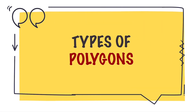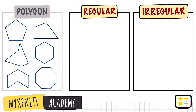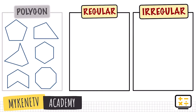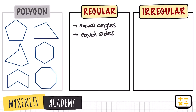We also have two types of polygons: regular and irregular polygons. Regular polygons have sides that are equal and angles that are also equal. Whereas irregular polygons have side lengths and angle measurements that are not equal.